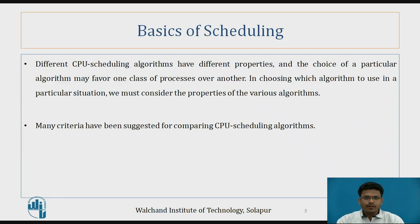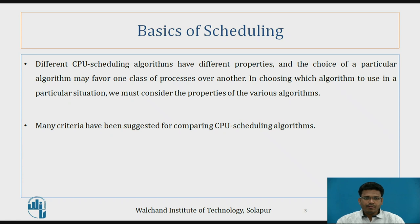Now let's see the basics of scheduling algorithms. When multiple processes come for execution in main memory, we need to schedule these processes to get proper utilization of the CPU. The different CPU scheduling algorithms have different properties, and the choice of a particular algorithm may favour one class of process over another. This selection of a process for execution has many criteria.